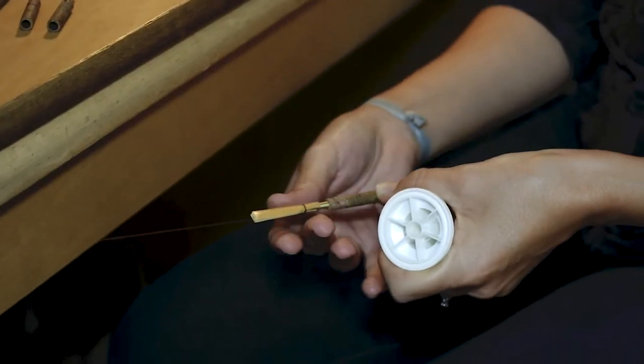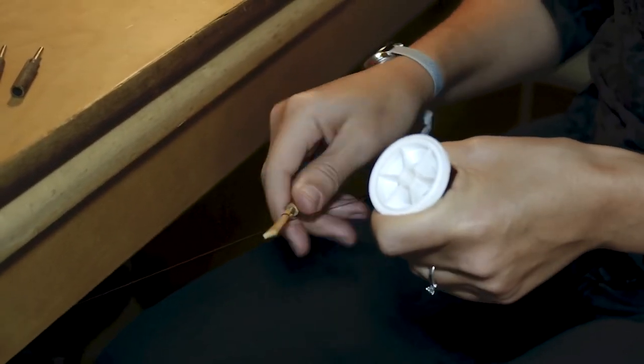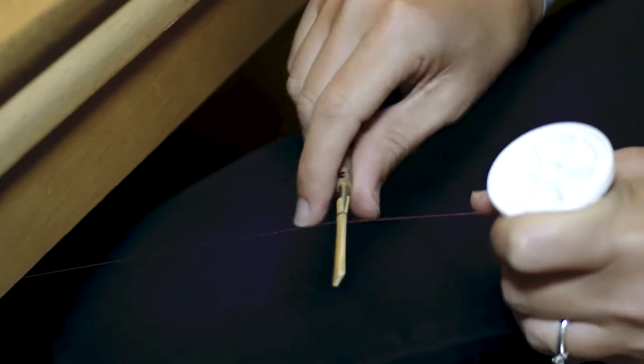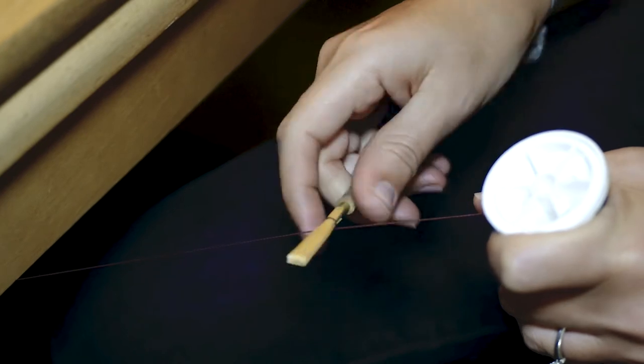I'm going to rub the beeswax onto the thread so it makes it sticky. That also helps the reed to seal so that water doesn't leak out between the thread. I'm going to make sure the reed closes evenly on both sides so that this opening is the same as this opening.